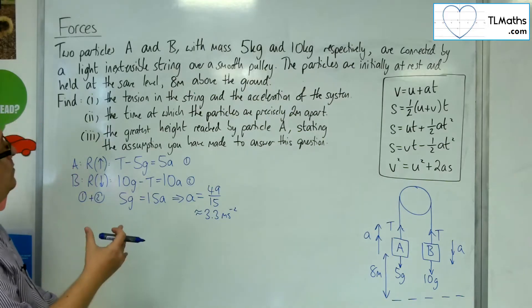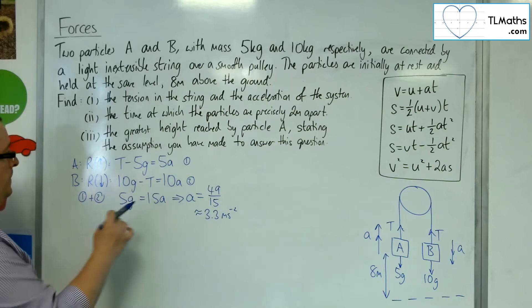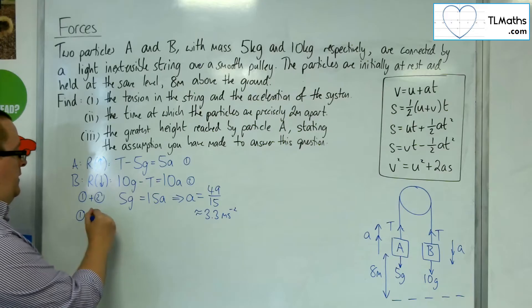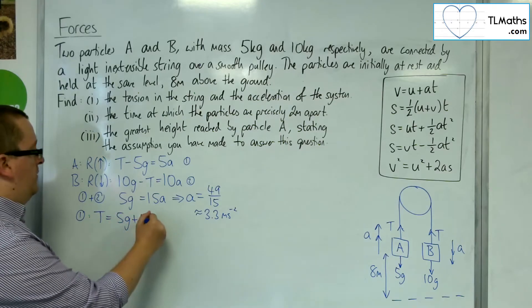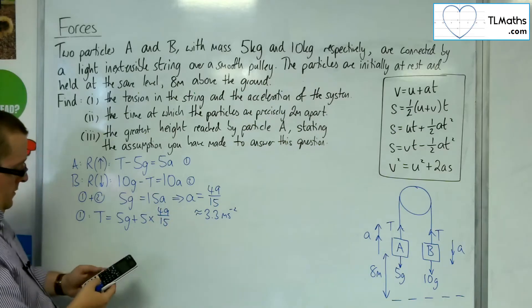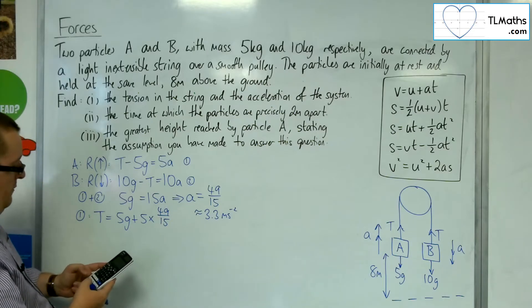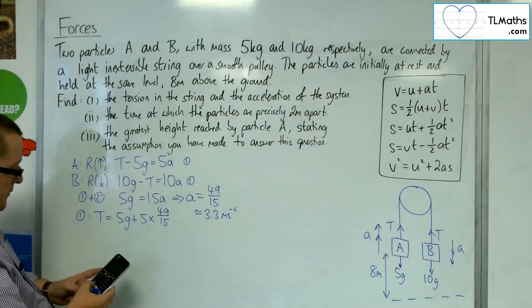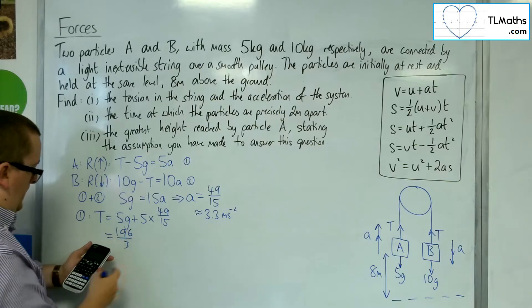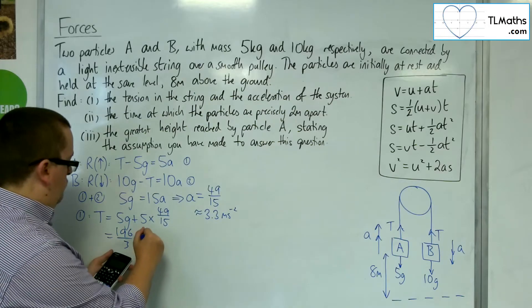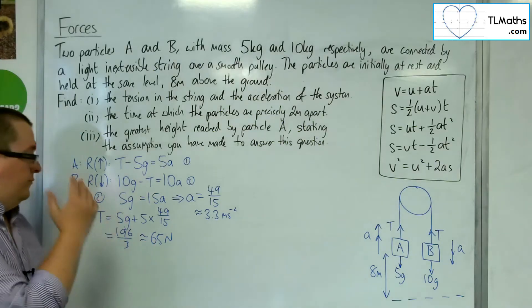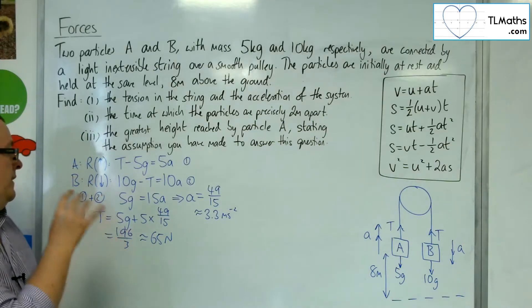Right, now I can work out the tension. So, the tension, if I substitute into equation 1, is equal to 5g plus 5 lots of A, which is 49 over 15. So, 49 over 15 times by 5, add on 5 lots of g, gets me 196 over 3, which is approximately 65 newtons. Okay, so, that's my acceleration and my tension.